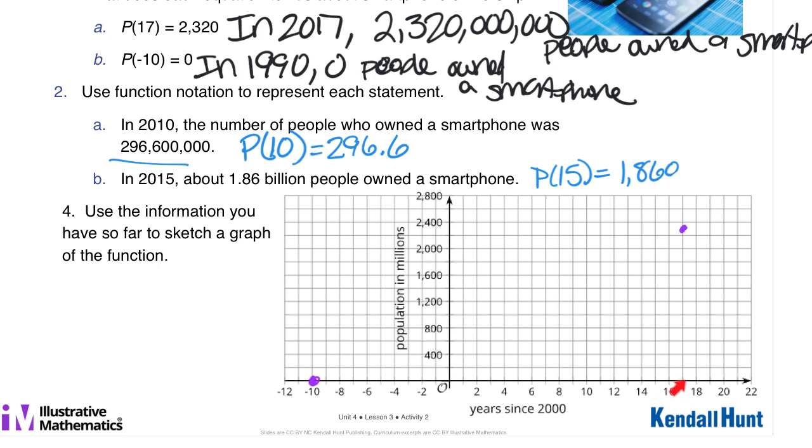So from part A, we know that in 2017, 2,320 million people owned a smartphone, and in 1990, 10 years before, zero people owned a smartphone.